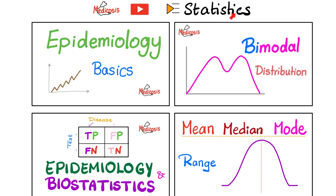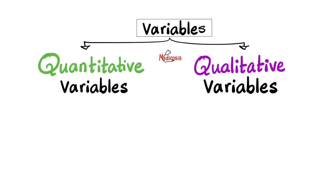This is my statistics playlist. Please watch these videos in order for maximum understanding and retention. And please do not confuse the word bimodal with binomial. Variables or data are divided into two main groups, quantitative variables and qualitative variables. These ones care about the quantity, but these ones care about the quality.